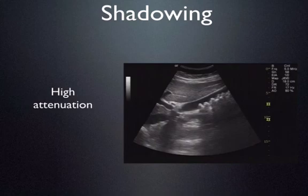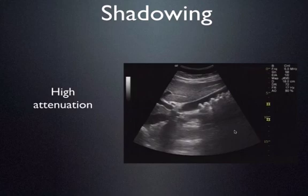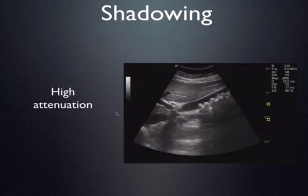The first artifact I want to talk about is shadowing, and that's usually a result of high attenuation — specifically clean shadowing. What we have here is a gallbladder, and you see numerous stones. Behind those stones you'll see lots of what we call clean shadowing — it's almost completely dropped out to black. You'll see shadowing anytime you're ultrasounding gallstones, kidney stones, bone, or some foreign bodies.